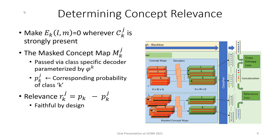Now comes the relevance computation path, which is a key component of our framework — relevance computation is integrated during the learning process. This is done by mimicking the absence or removal of a concept. At locations where the concept is strongly present, the embedding vector is replaced by a zero vector, denoting removal of the concept. We then follow the pipeline and note the drop in probability as a result of removing this concept. This drop in probability is the relevance metric. As this metric incorporates the black box into the pipeline, it is faithful by design.